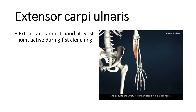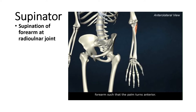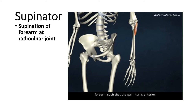The action of extensor carpi ulnaris is that it extends and adducts the hand at the wrist joint, and it is active during fist clenching. The action of the supinator muscle is supination of the forearm at the radio-ulnar joint.